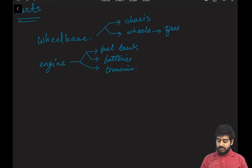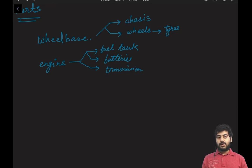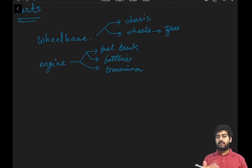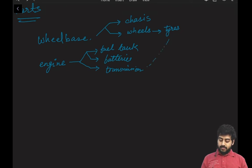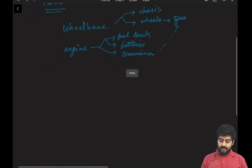The engine type will also define the kind of transmission you need. The transmission can be automatic or manual, and within that it can be two-wheel drive, four-by-four, or four-by-two. You have different kinds - all-wheel drive, rear-wheel drive - and it also depends on the number of tires you have.